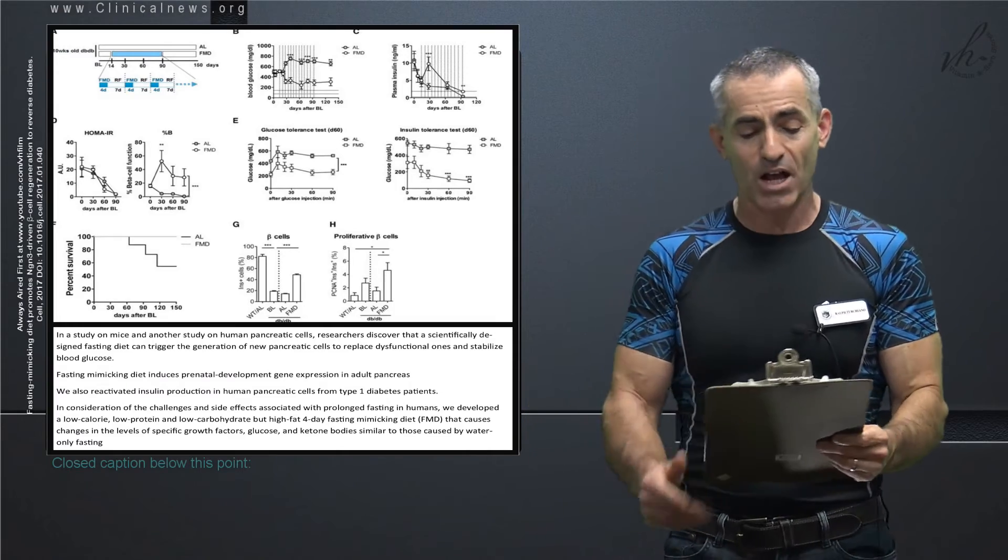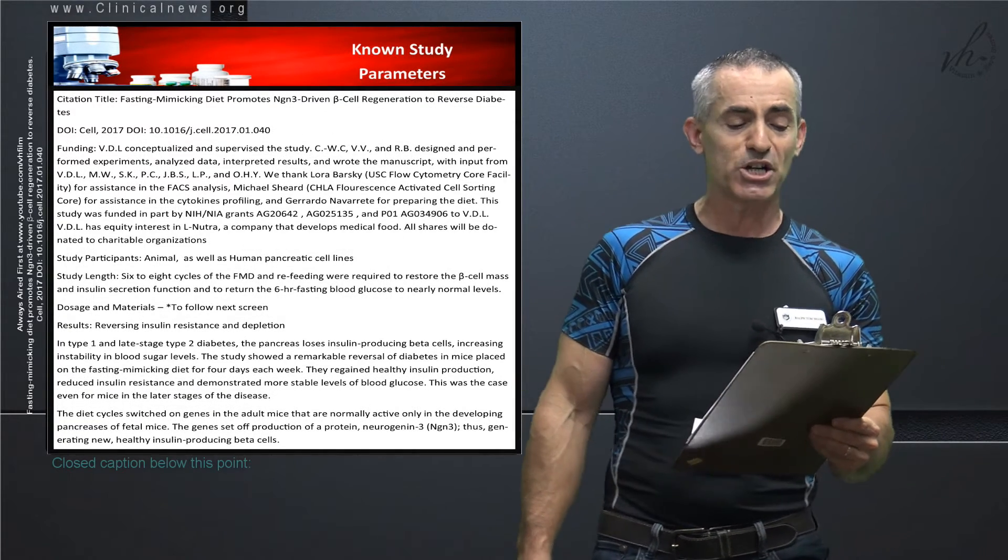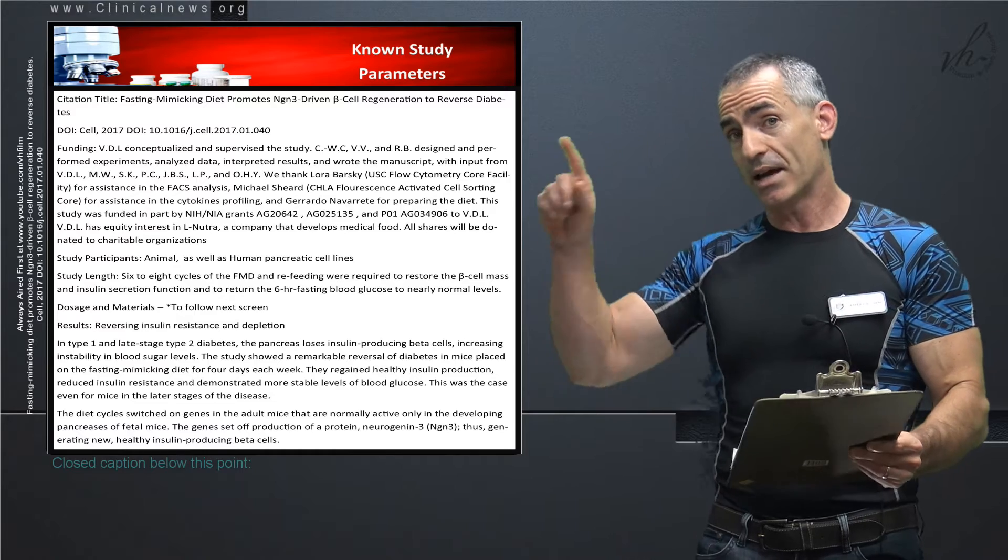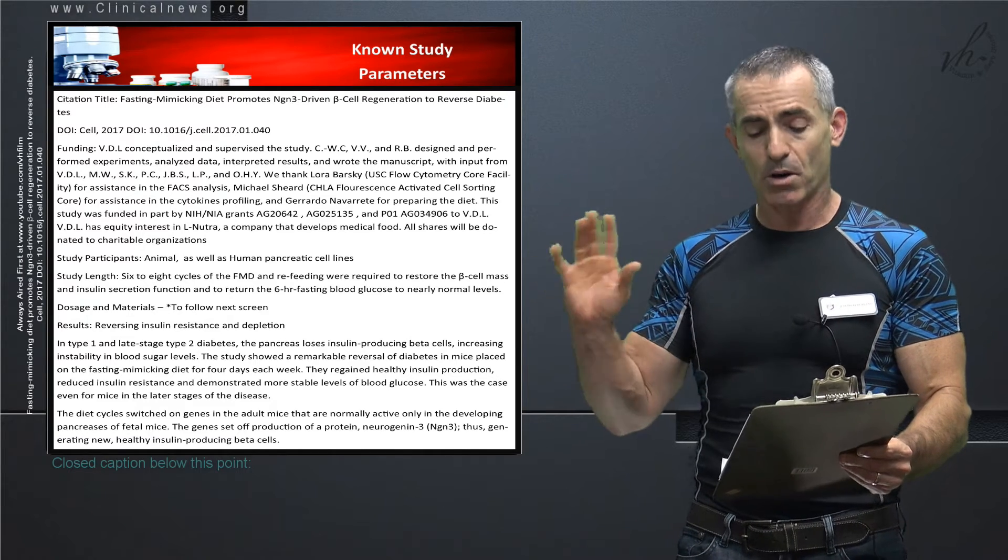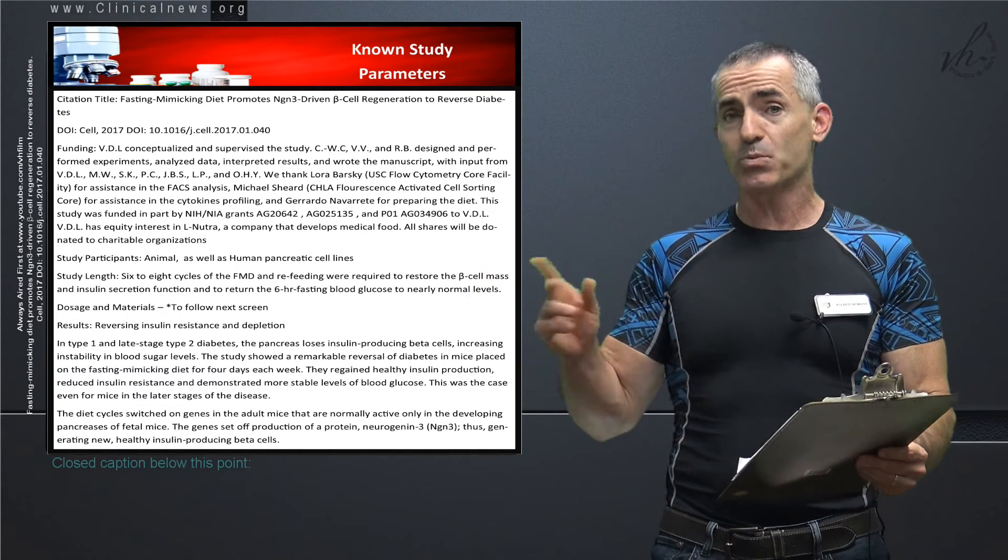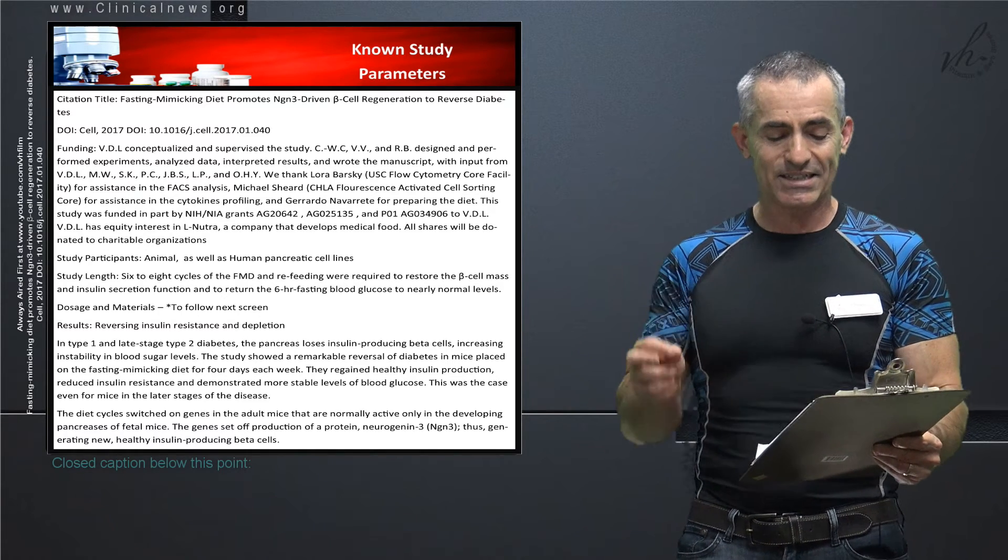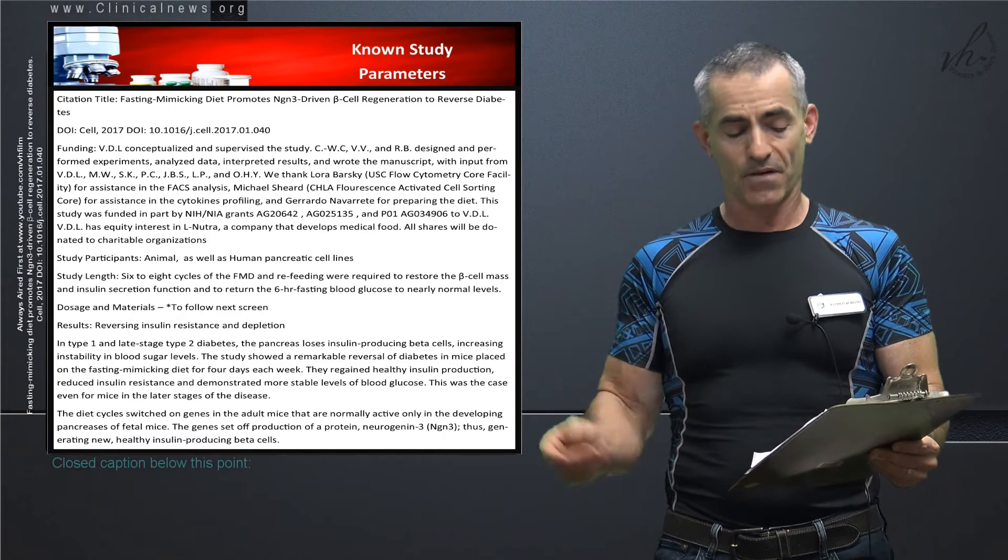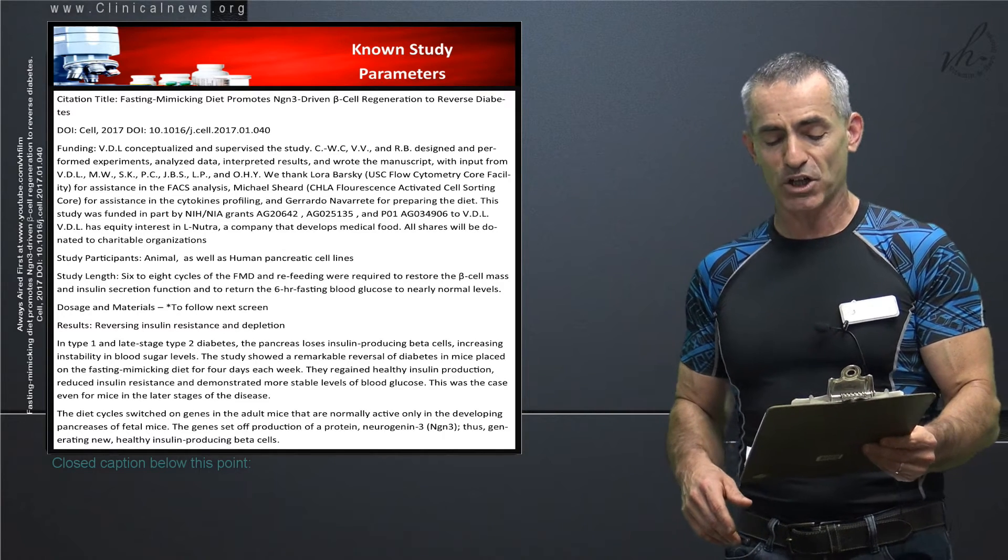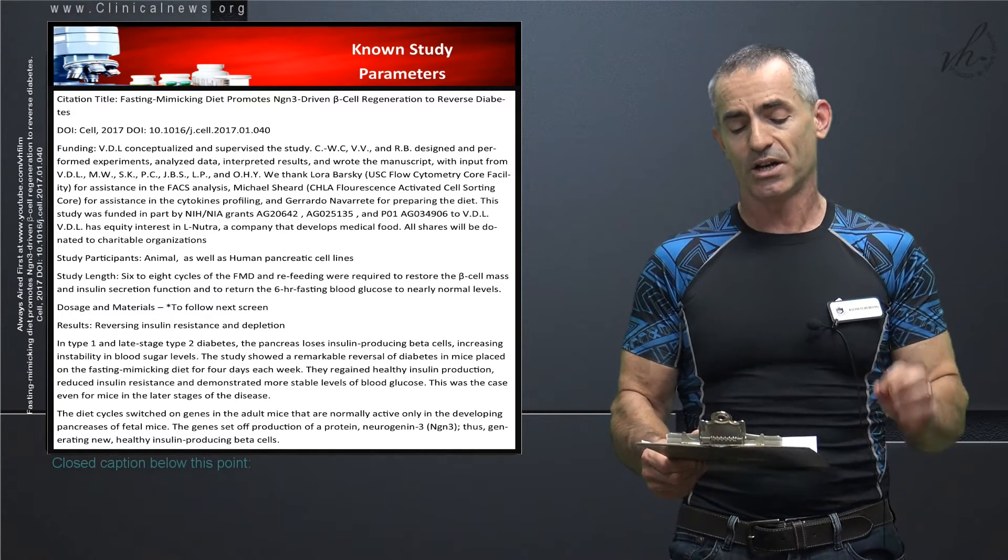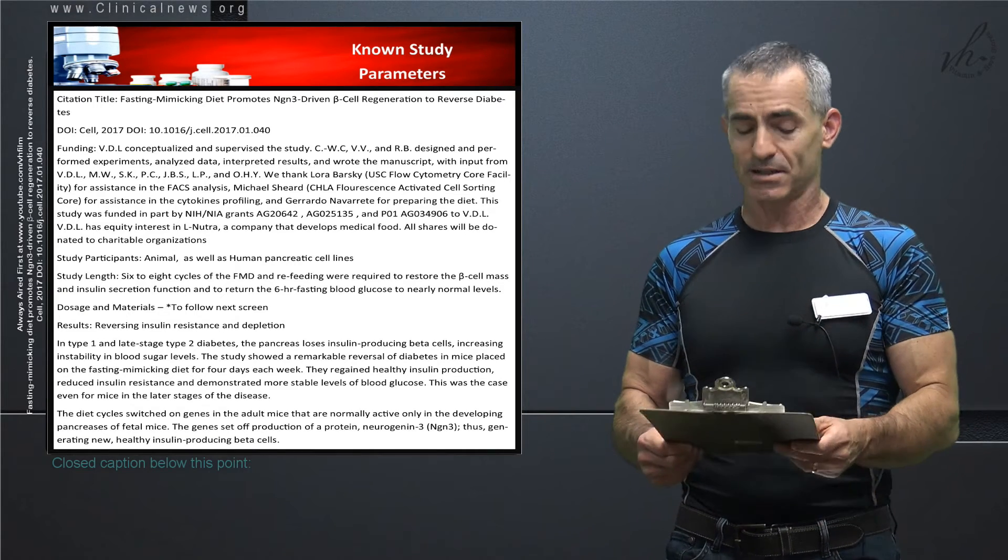Let's go right to the study parameters as follows. Citation: fasting mimicking diet promotes NGN3-driven beta cell regeneration to reverse diabetes. There's a COI I'm not comfortable with, but however the research is in detail, so I don't mind publishing it. Study participants were animals as well as human pancreatic cell lines. Six to eight cycles of FMD and refeeding were required to restore the beta cell mass and insulin secretion function and to return the six-hour fasting blood glucose to nearly normal levels.